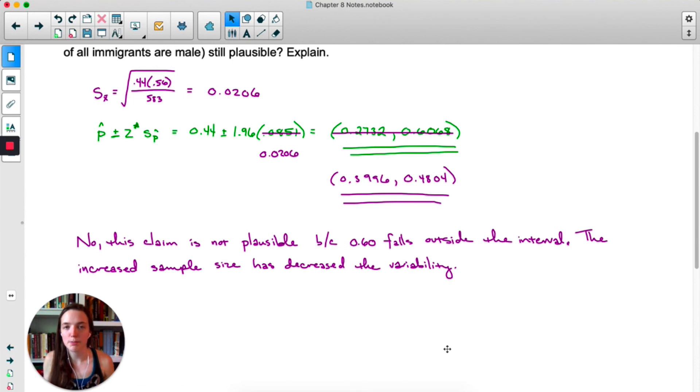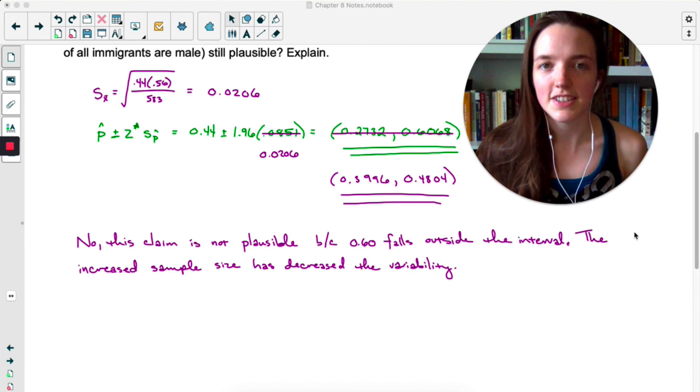Because 60% is well outside of the interval. So the increased sample size has decreased the variability, which has made our interval narrower. Because 60% is not included in the interval, it is not a plausible value for P. Based on this particular sample, it looks like the proportion of migrants who are male is below 50%, so less than half, because the upper limit of this interval is only 48%. So in terms of statistics, what did we learn? How to do confidence intervals for proportions.